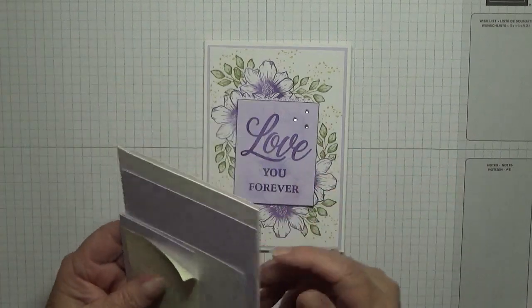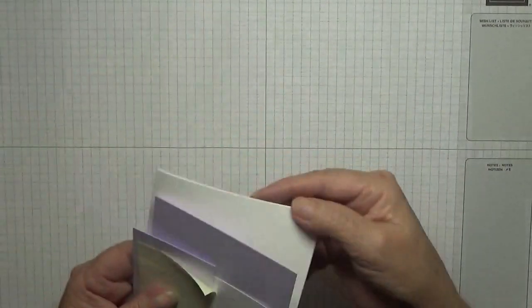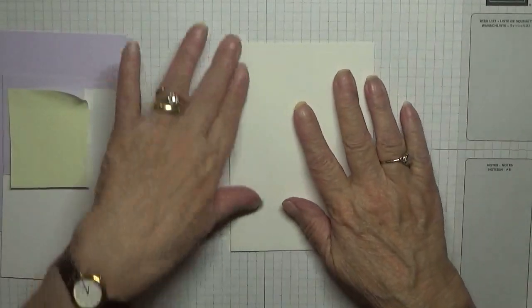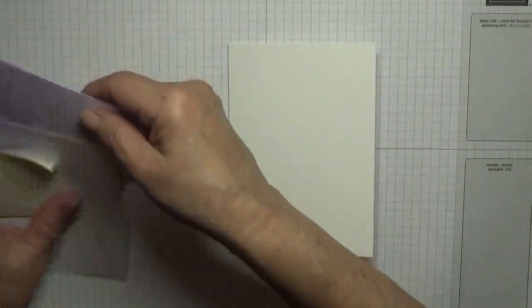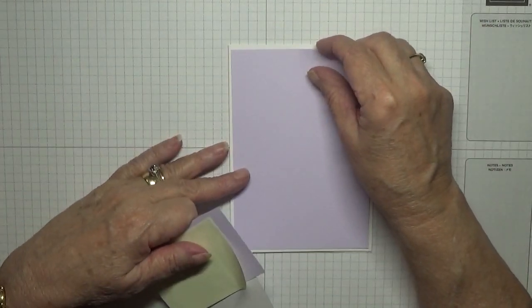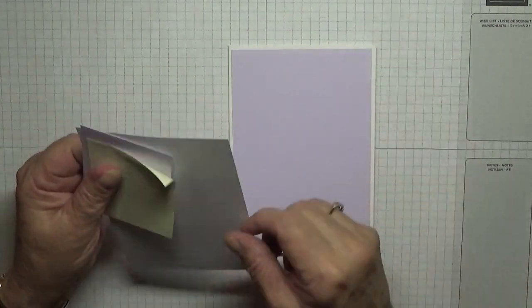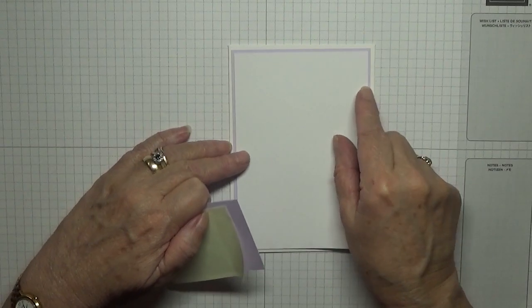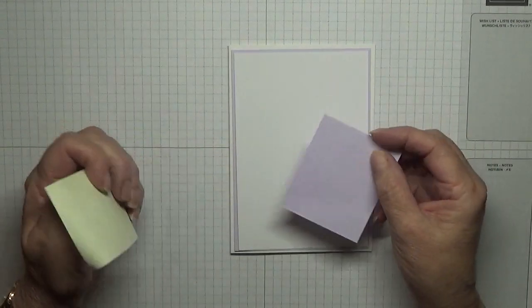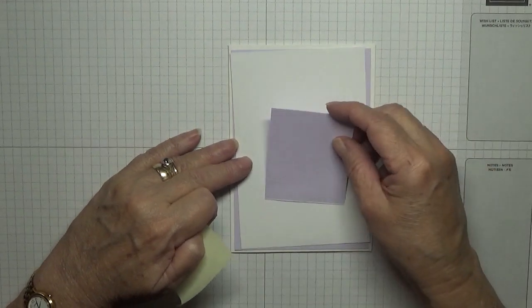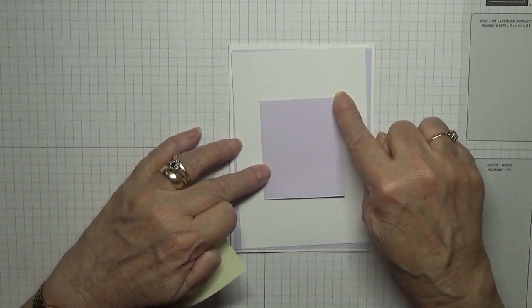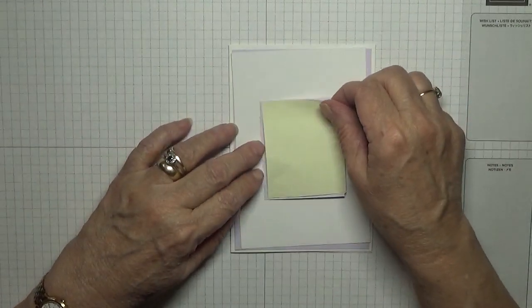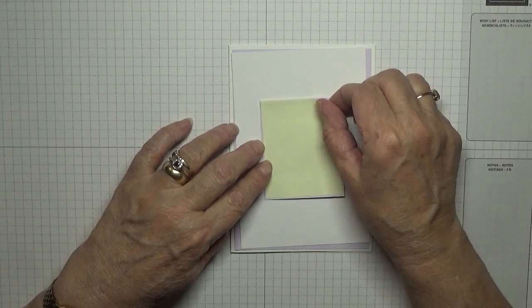I've got a blank card base of eight and a quarter by five and seven eighths, scored at four and one eighths, folded in half. A piece of purple posy at five and five eighths by three and seven eighths. A piece of white card stock at three and three quarters by five and a half. A piece of purple posy at two and three quarters by two and a quarter, and a piece of post-it note the same size.